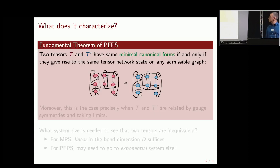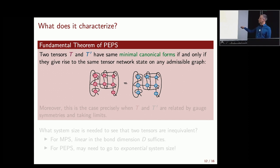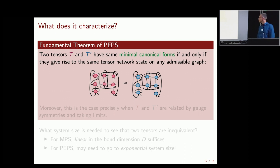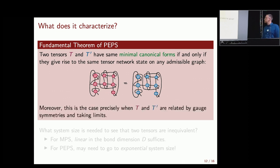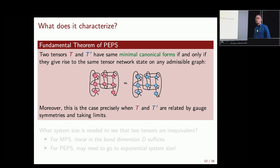Our fundamental theorem says two PEPS tensors have the same minimal canonical form if and only if they give rise to the same tensor network states on any graph topology or surface. You take many copies of the same tensor — uniform PEPS — connect left to right and up to bottom in any way you like, and you get the same many-body state if and only if they have the same minimal canonical form. And having the same minimal canonical form is exactly equivalent to T and T-prime being related by gauge symmetries and taking limits.